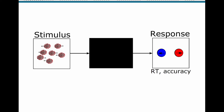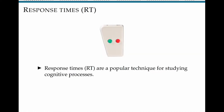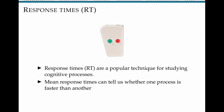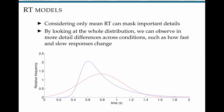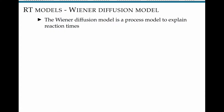The typical way people study this in the lab has been to look at reaction time and accuracy. Reaction time is a very popular technique — if we think one process is faster than another we can look at mean reaction times. But we don't want to look just at means or even means and standard deviations, because we might miss important details. Two distributions can look quite different and tell us different things about the decision process, yet still have the same mean and standard deviation.